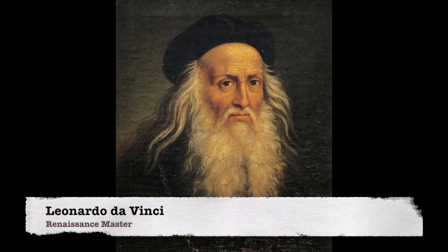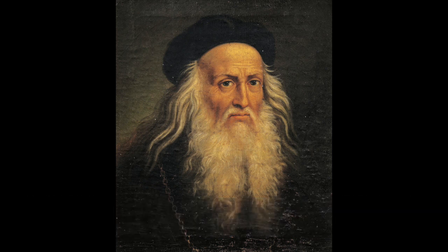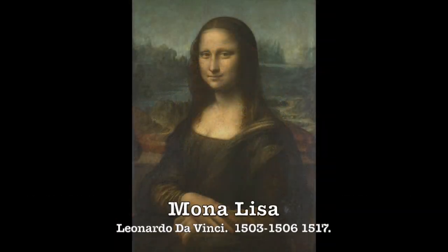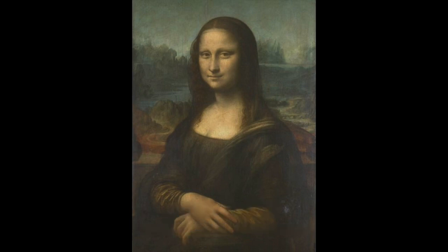Leonardo da Vinci was not one to be personally attached to his art, but there was one exception, and that exception was the Mona Lisa — that he would paint from 1503 to 1506, with maybe a little bit of work done in 1517.